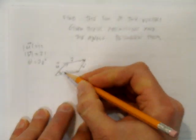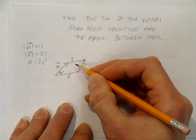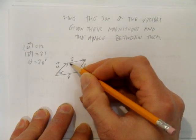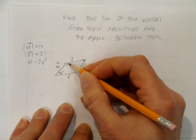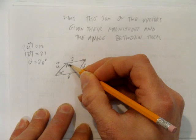We know this angle is 70 degrees, which means, based on the z pattern, since these two angles are supplementary and add to 180, this angle in here has to be 110 degrees.